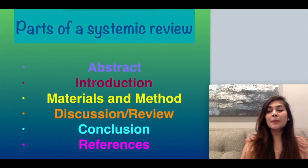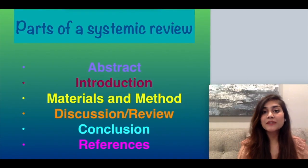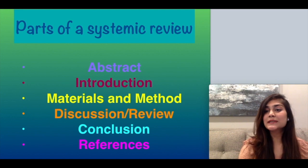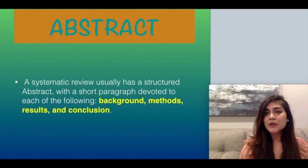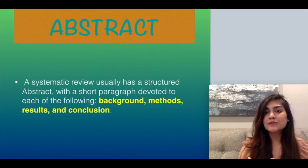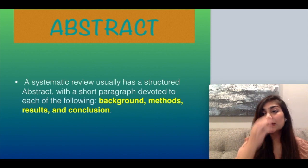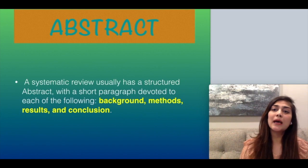Now we will talk about the parts of a systematic review: the abstract, introduction, materials and methods, discussion, conclusion, and references. The abstract is usually short and structured. It contains background, aims and objectives, methods, results, conclusion, and the inclusion-exclusion criteria.